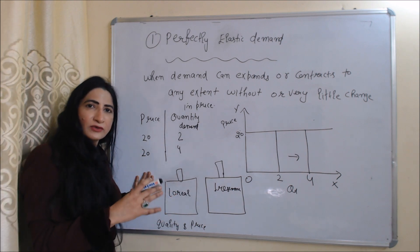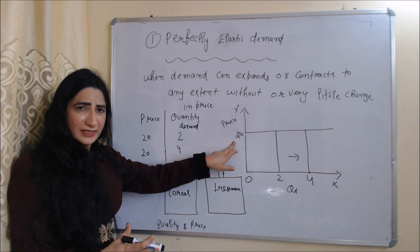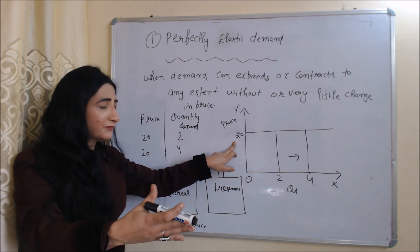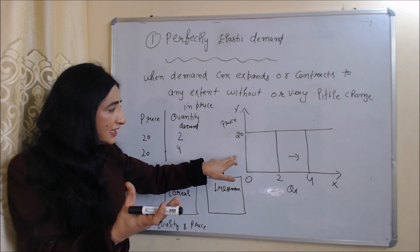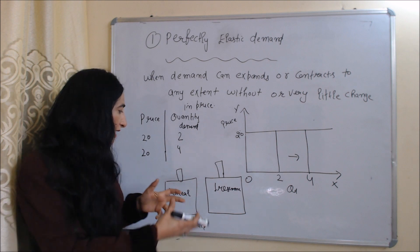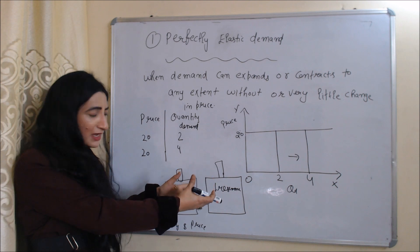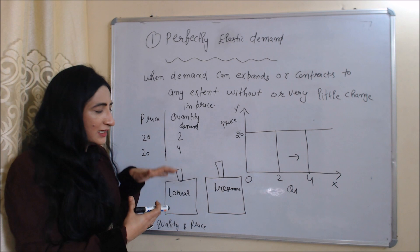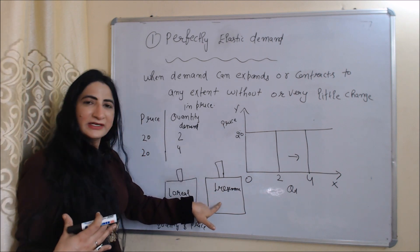For example, suppose the quality and price of two shampoos — L'Oreal and Trasima — are exactly the same. At the common price, you can buy L'Oreal in quantities of 2, 4, or as much as you want. But if the price of L'Oreal increases even a little, your demand can reduce greatly, even to 0. Because now, why would you buy L'Oreal? You would buy Trasima, since the quality is exactly the same and Trasima's price hasn't changed. Only L'Oreal's price increased, so you would reduce your purchase of L'Oreal and switch to Trasima.